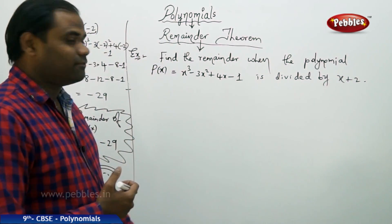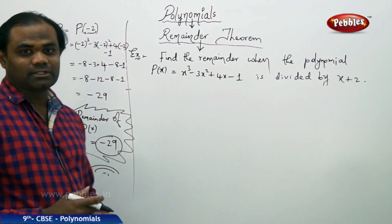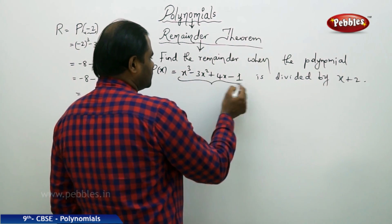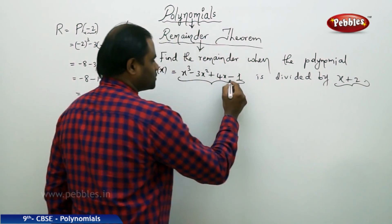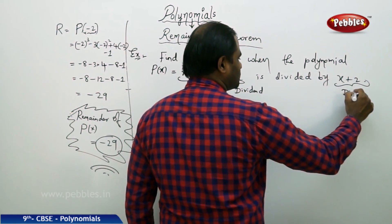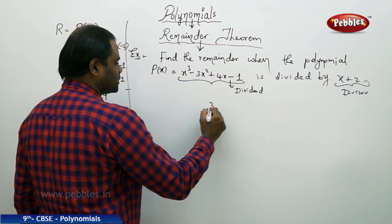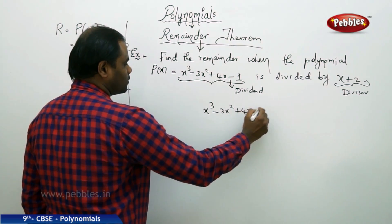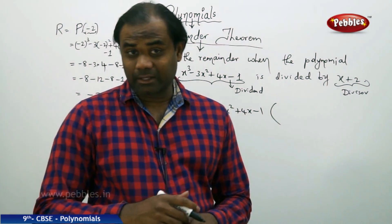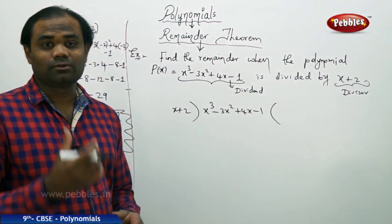Here we are going to verify whether we really get the remainder to be minus 29 when we solve through the long division general method. I have the dividend which is x³ minus 3x² plus 4x minus 1 and the divisor x plus 2. Let's find the quotient and the remainder to verify against the result obtained through the remainder theorem.